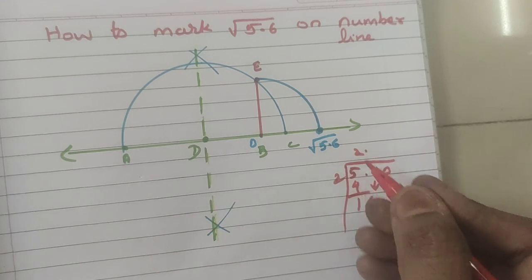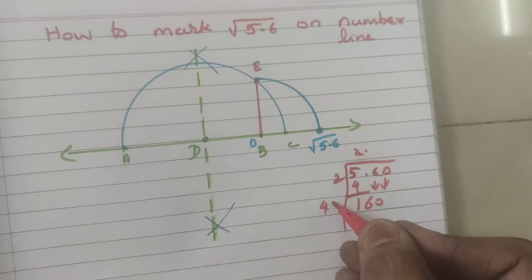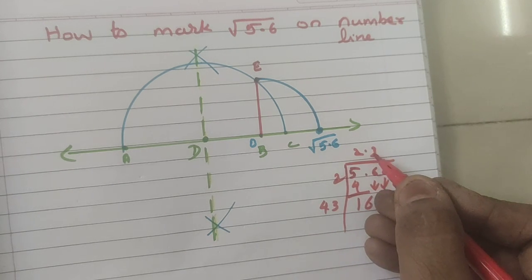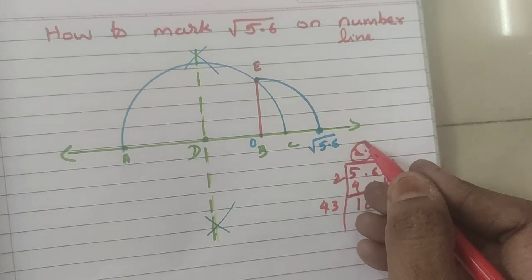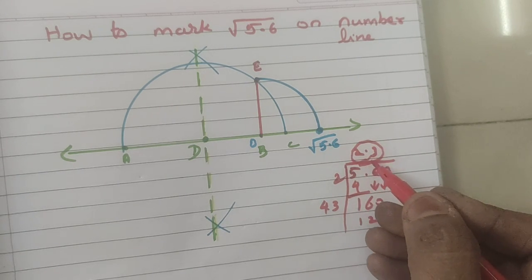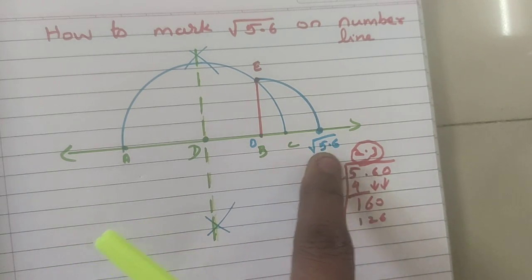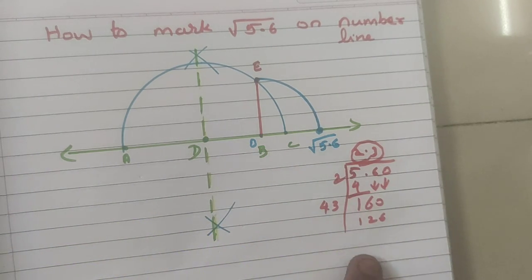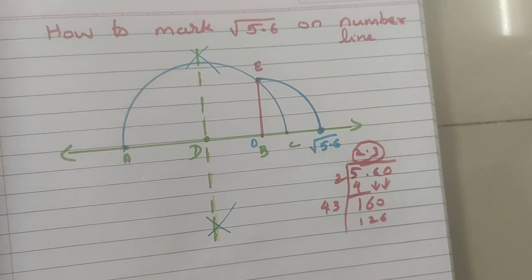So, 2 plus 2, 4. With 4, if I multiply 3, 3 into 43, I will get 129. So, we can stop here itself because we need the exact answer 2.3. So, that is what if you measure, you will get 2.3. This is for verification. You can check your answer whether it is correct or not.